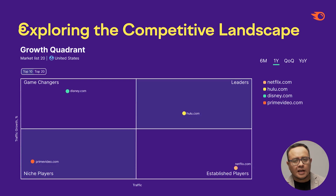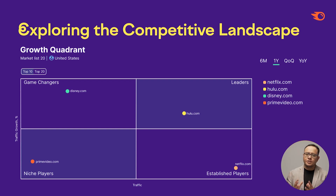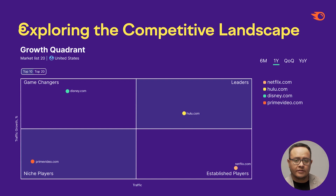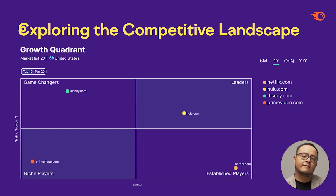In the growth quadrant, competitors are divided into four segments which indicate the position of companies in the market. The growth rate in this case directly depends on the traffic, its growth, and the total volume.